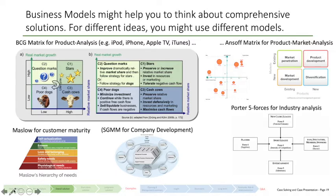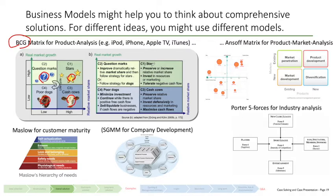Examples might include the BCG matrix, where we analyze market potential and current market size, then structure our products into question marks, stars, cash cows, and poor dogs. For each of those four categories, there is a best practice on how to move forward. Question marks must be actively moved into the market; for stars, we might need extension aspects; for cash cows, we guard against additional competitors; and for poor dogs, we might actively discontinue or liquidate them, or move them up to stars.